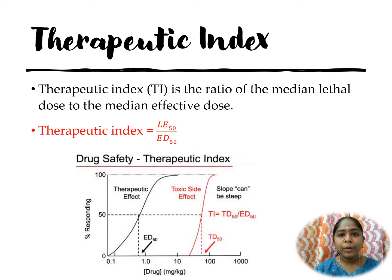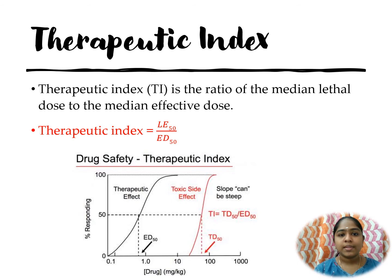Therapeutic index is given by the ratio of the median lethal dose to the median effective dose. That is, therapeutic index equals LD50 divided by ED50.